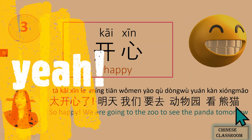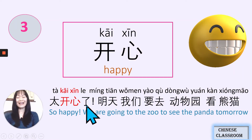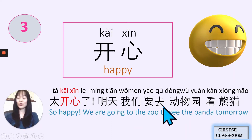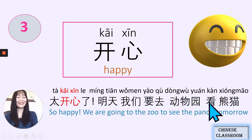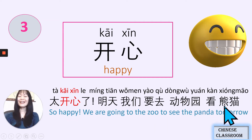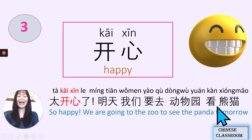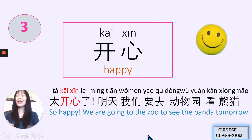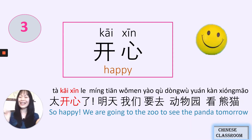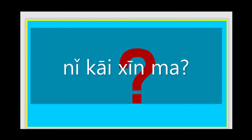太开心了! 明天我们要去动物园看熊猫 — so happy! Why are you happy? 明天 — tomorrow, 我们 — we, 要去 — want to go. To go where? 动物园 — the zoo. To do what? 看熊猫 — to look at the pandas. 太开心了, 明天我们要去动物园看熊猫. 你开心吗? Are you happy? 我很开心 — I am very happy.